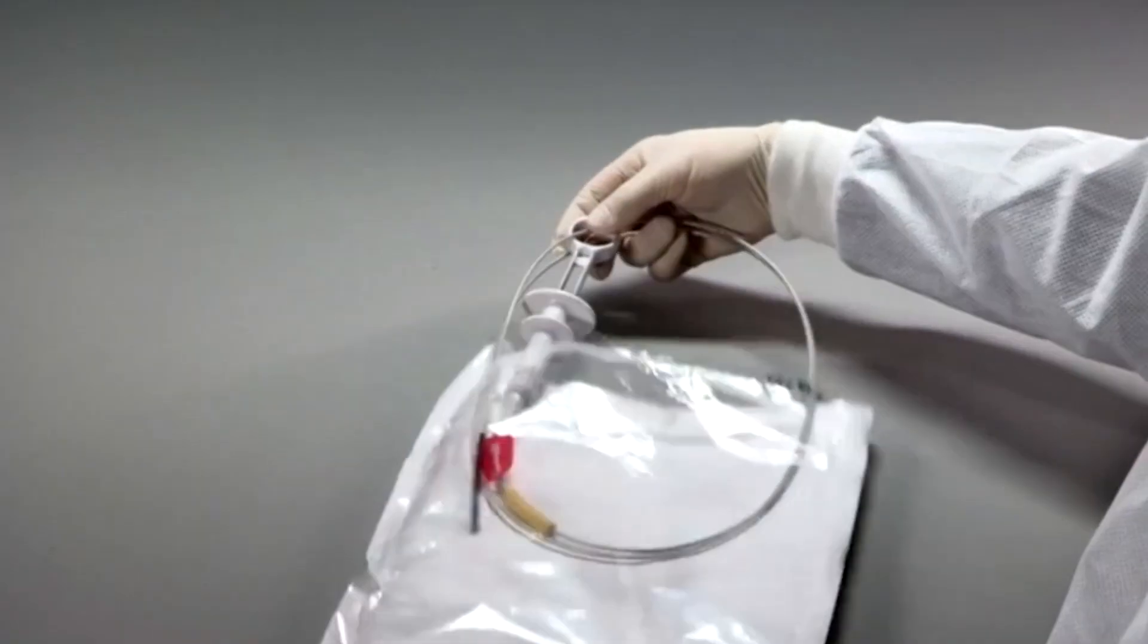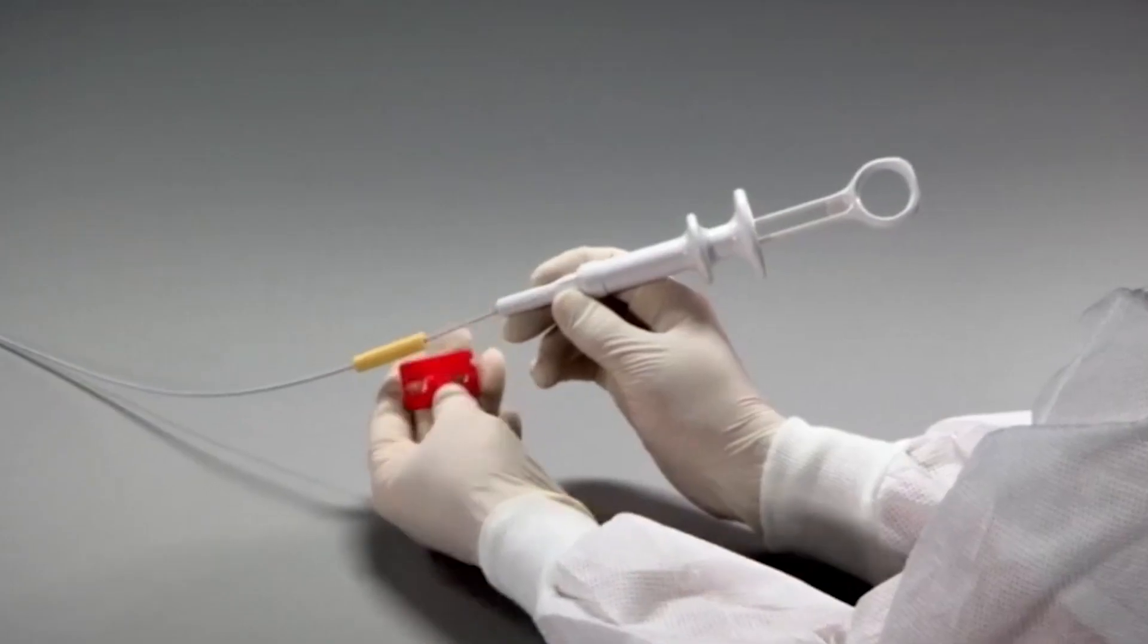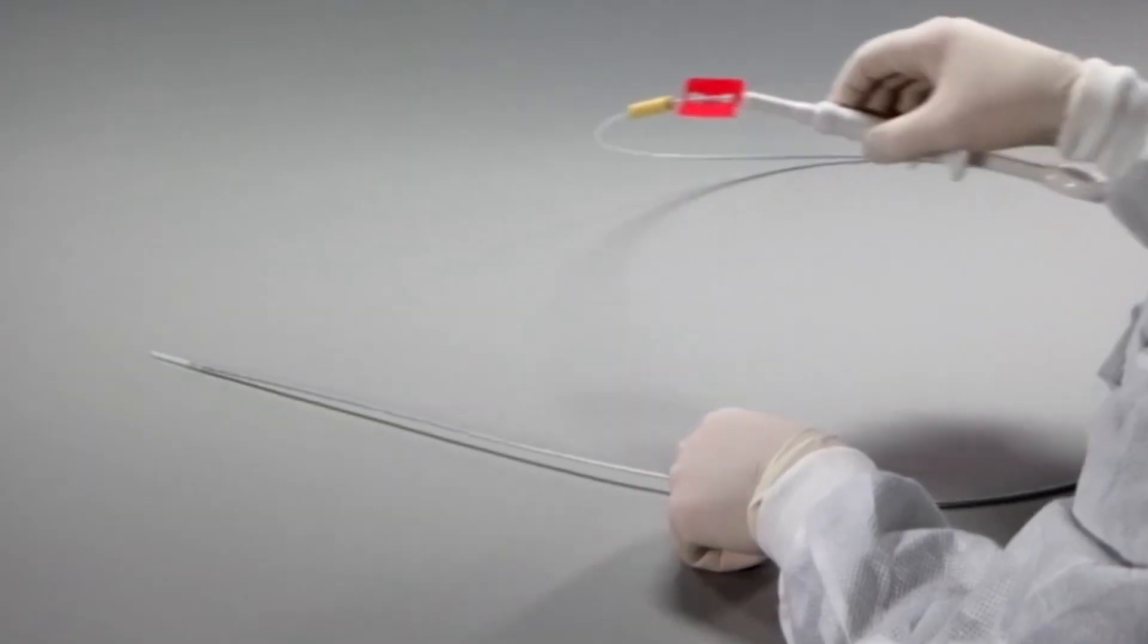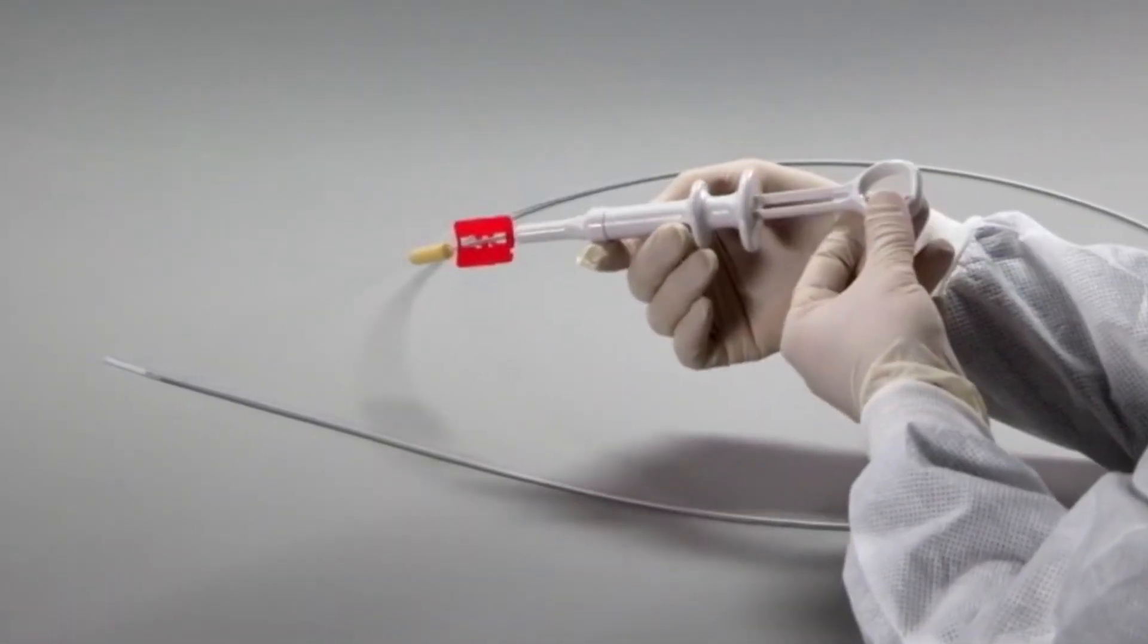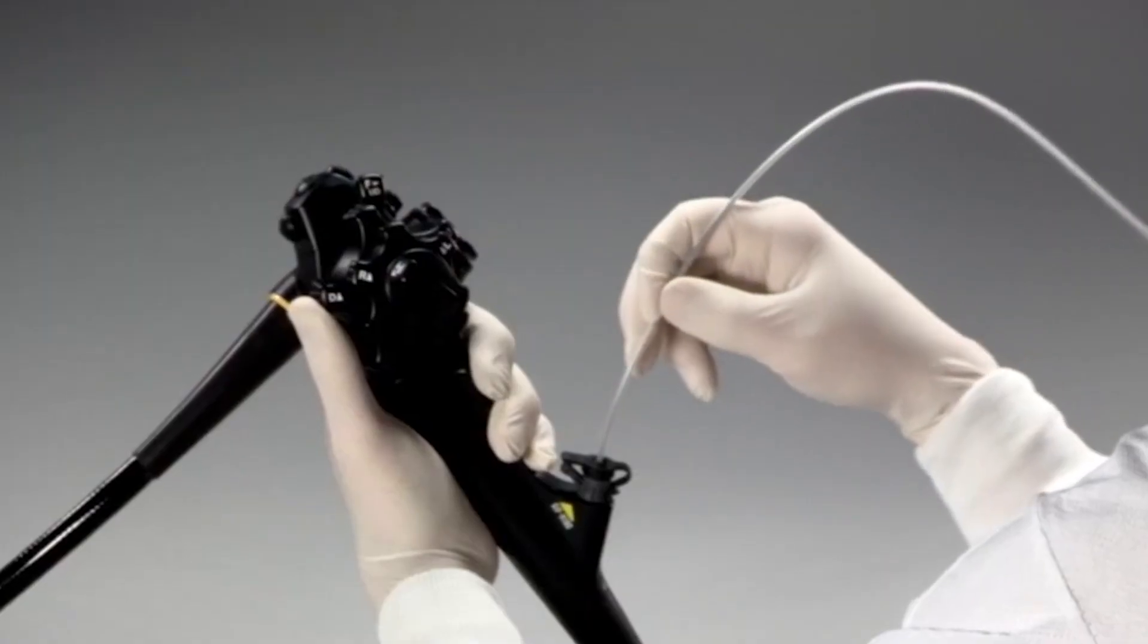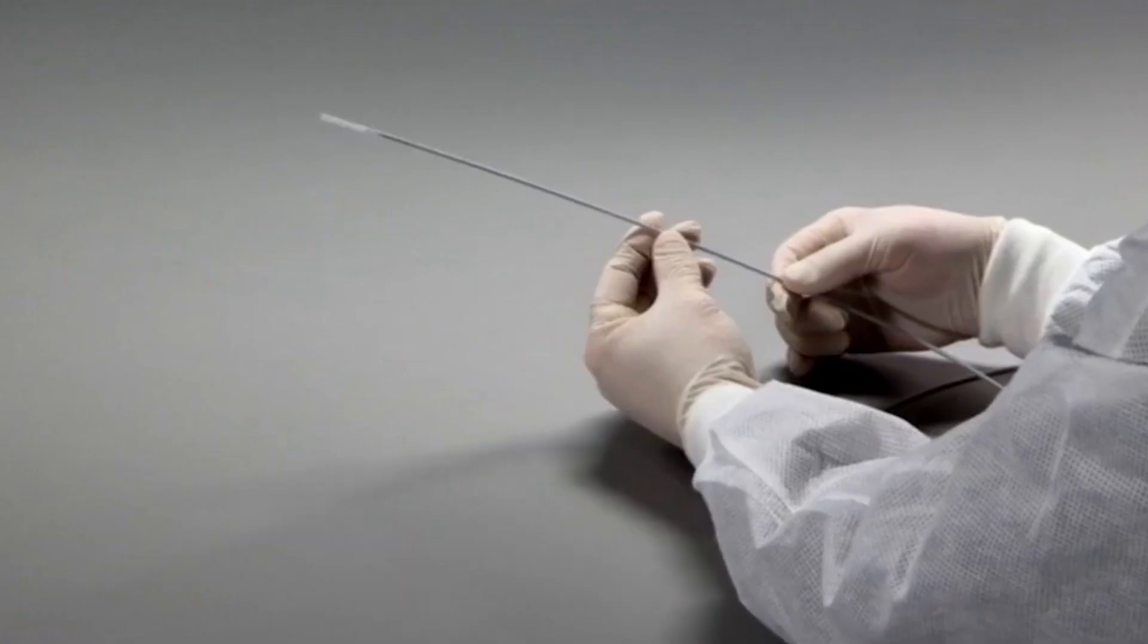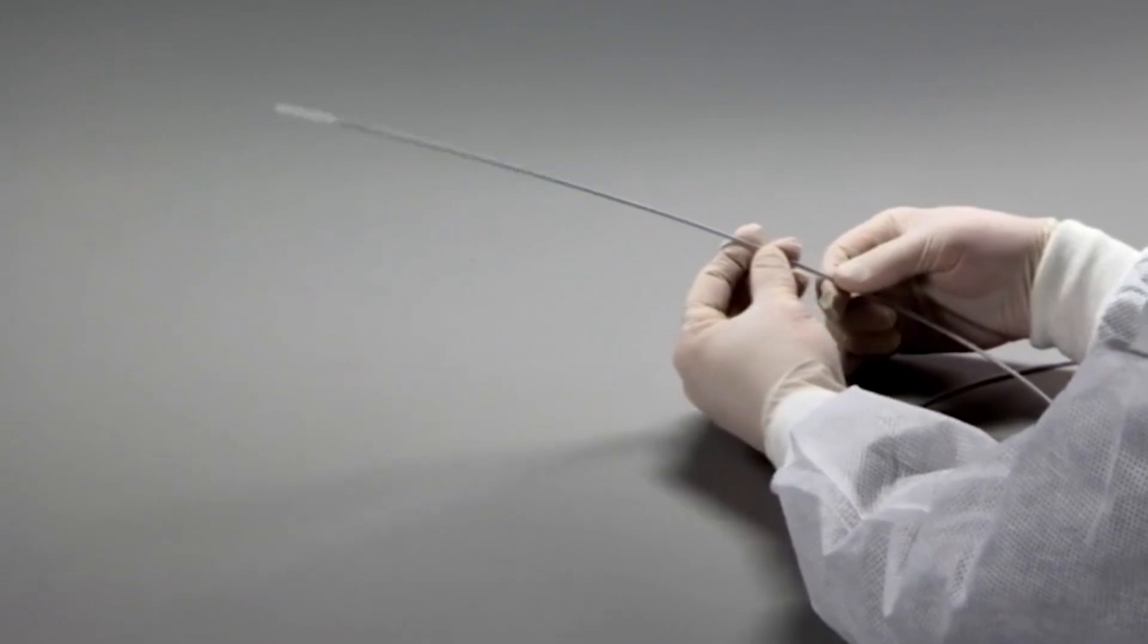Welcome to the training video for the QuickClip Pro Endoscopic Clipping Device from Olympus. This video will demonstrate the steps needed to properly use the QuickClip Pro device to achieve hemostasis during endoscopic GI tract procedures. Please note that this video is for instructional purposes only and is designed for use only by medical professionals.